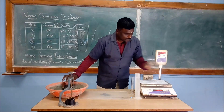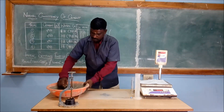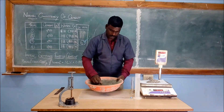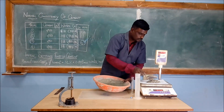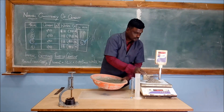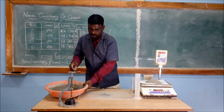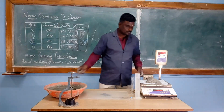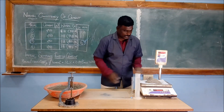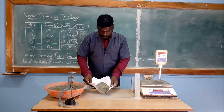We are taring the weighing balance. Now we are putting the cement in the weighing balance and taking 250 grams of cement. The cement should be placed on the glass board.